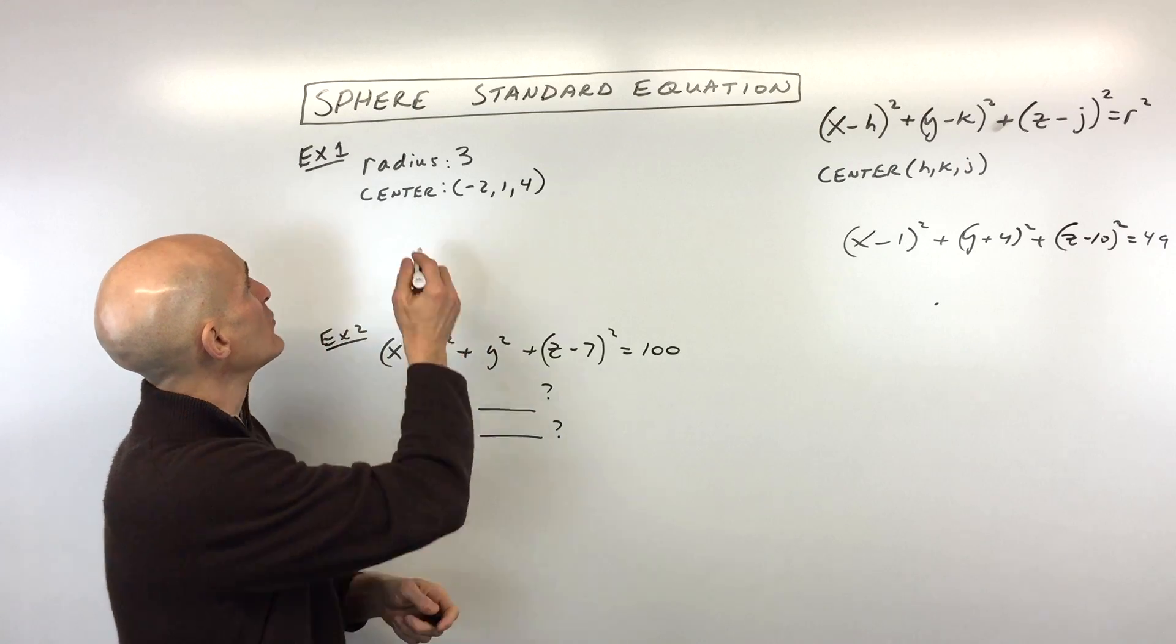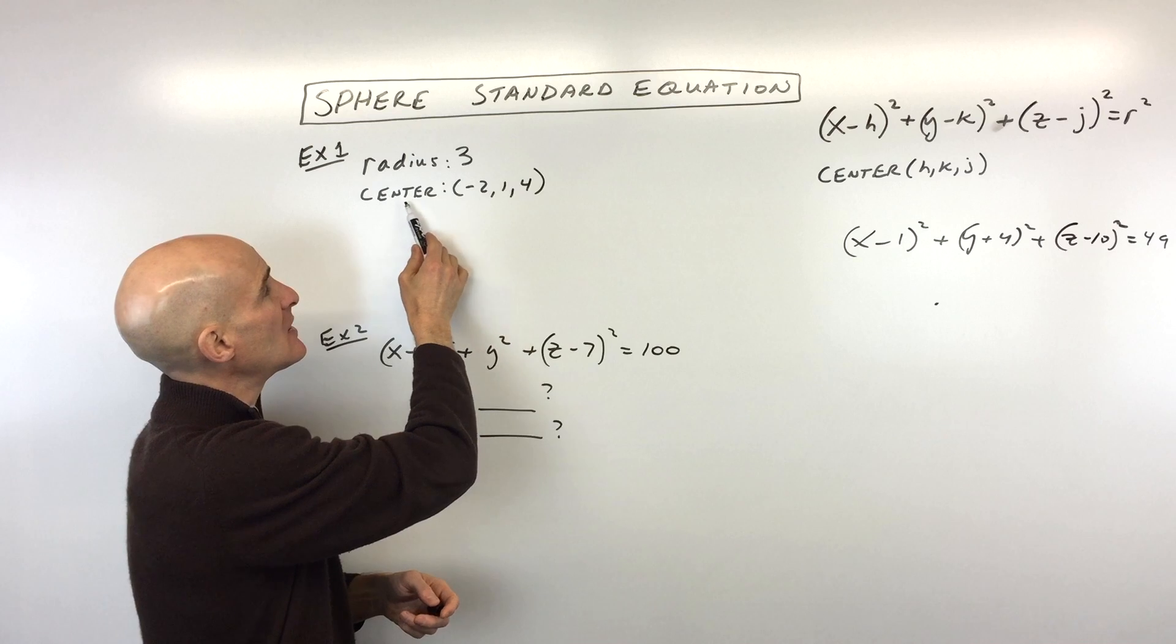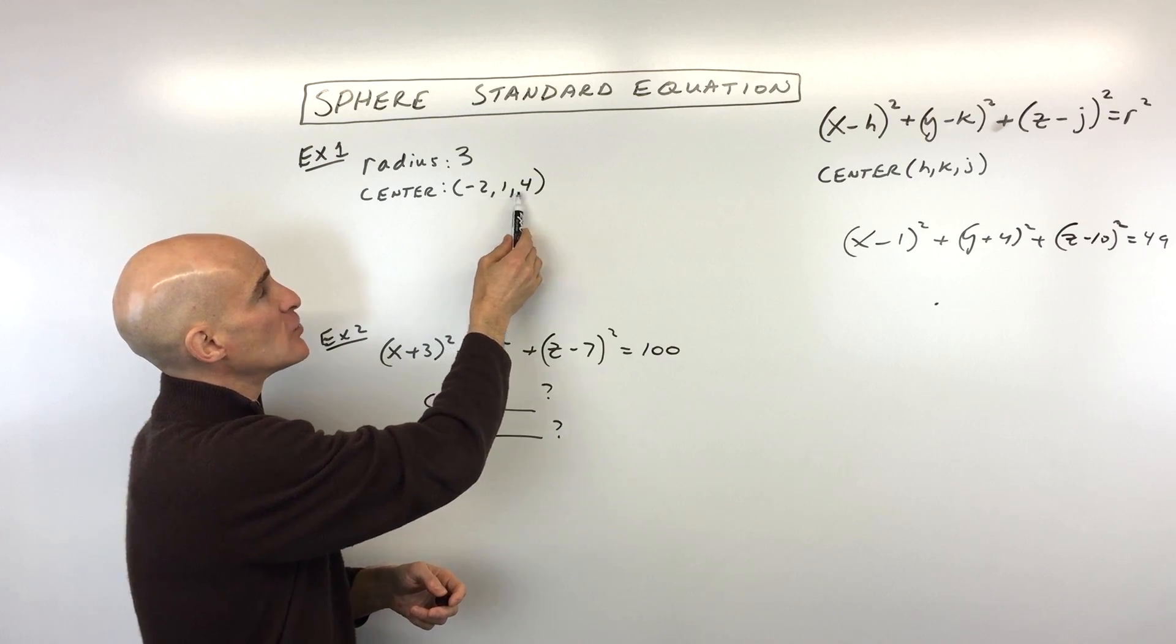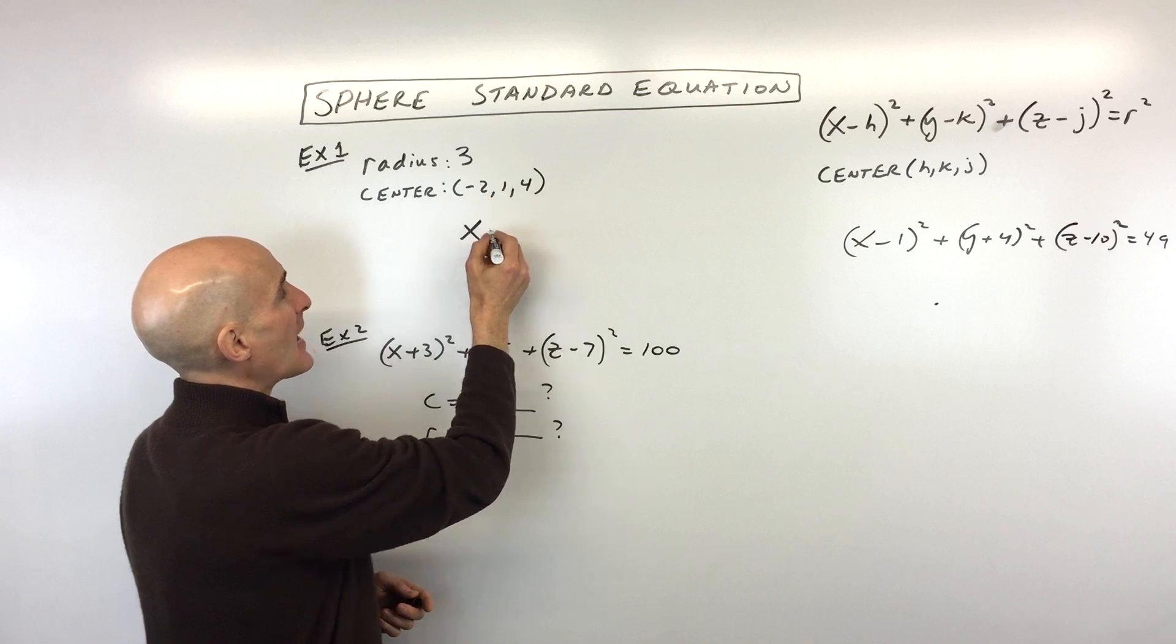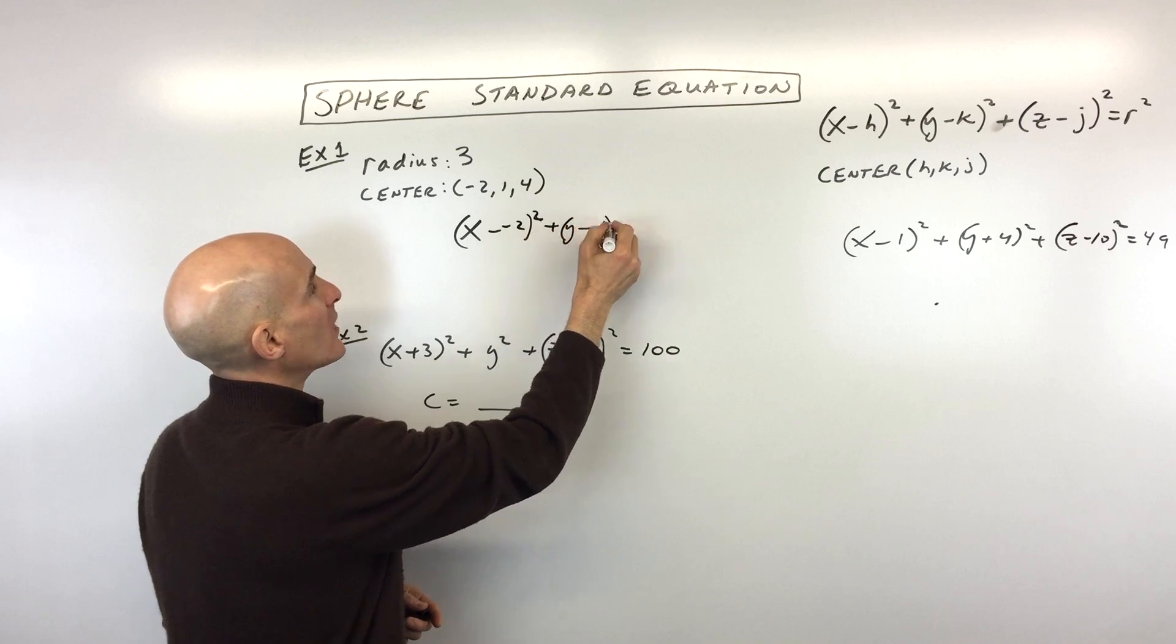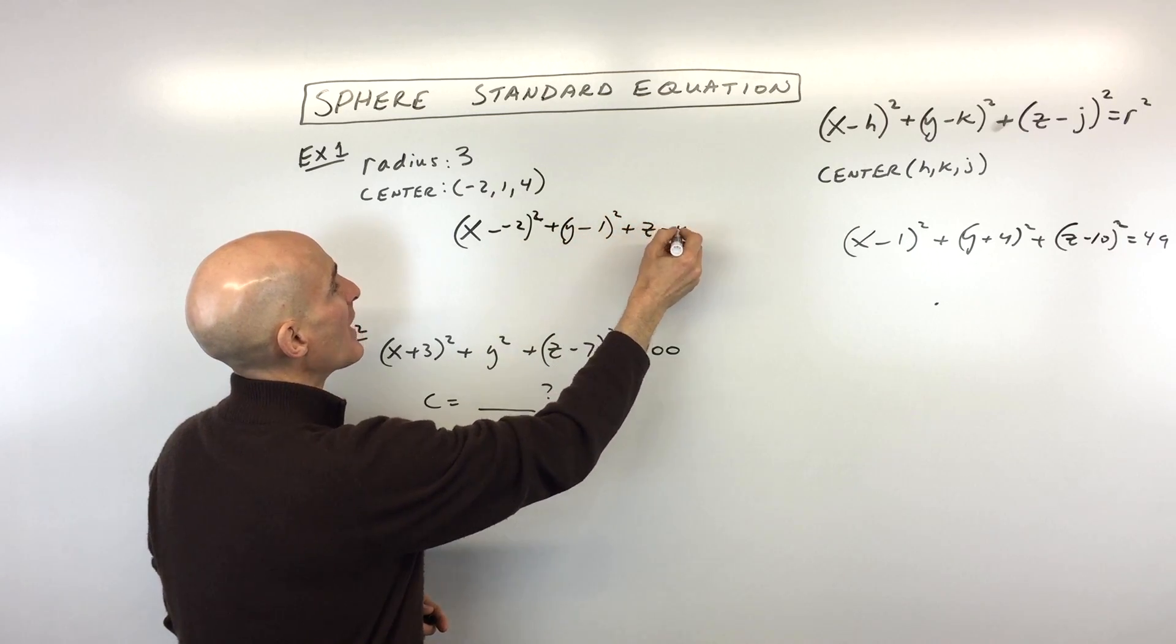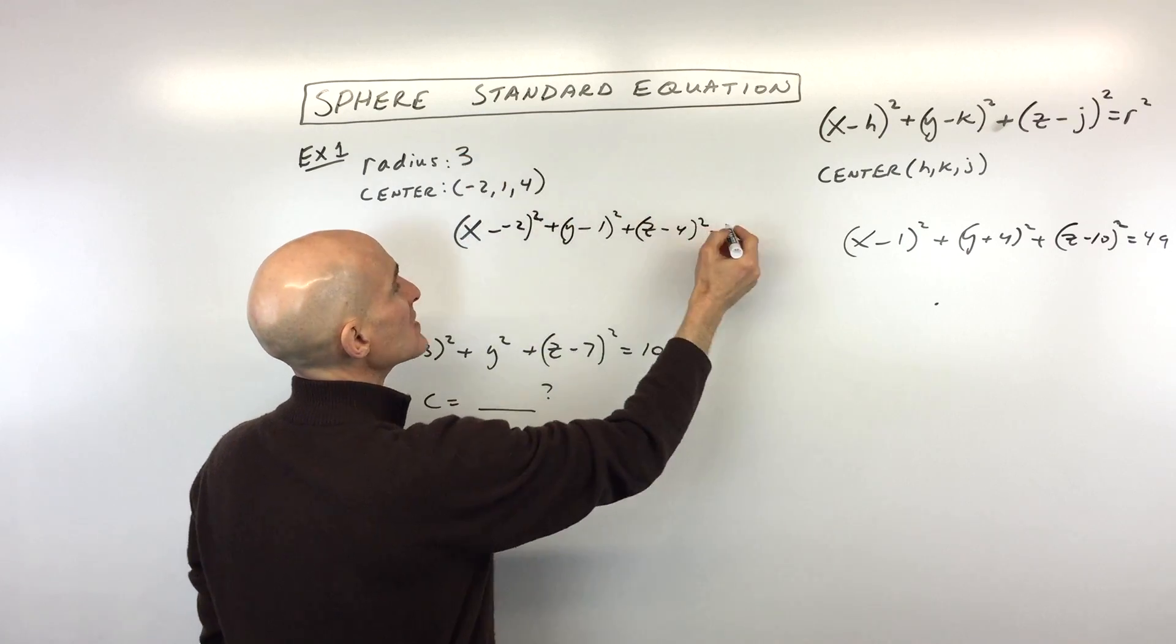So let's look at two basic examples. The first one, say, for example, we want to find the equation of a sphere with radius 3 and center at (-2, 1, 4). Okay, so basically what we're going to do is we're going to say (x - (-2))² plus (y - 1)² plus (z - 4)² equals the radius squared.